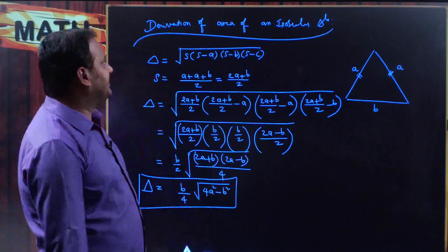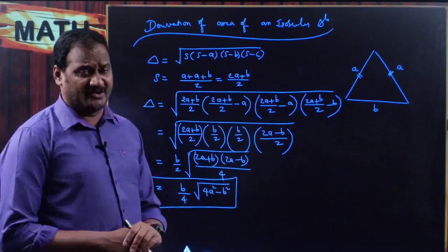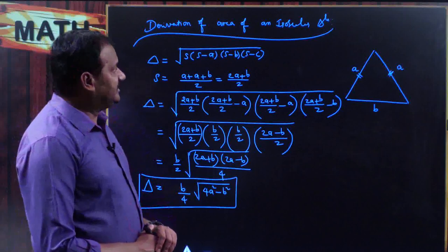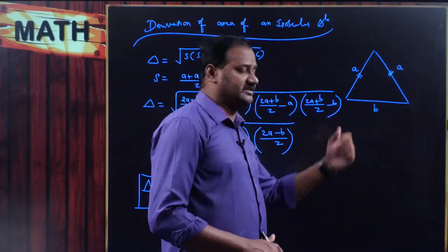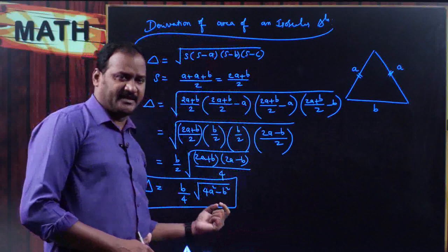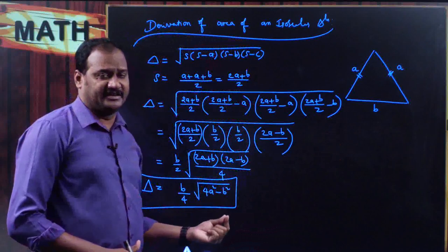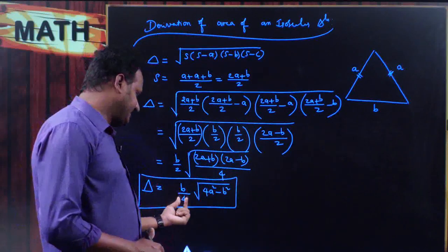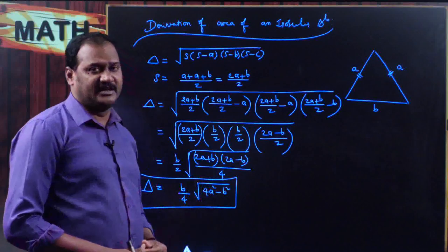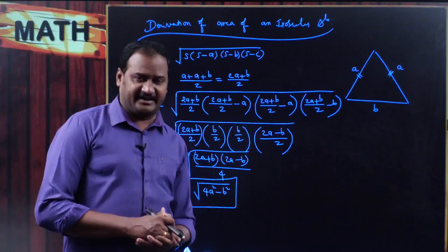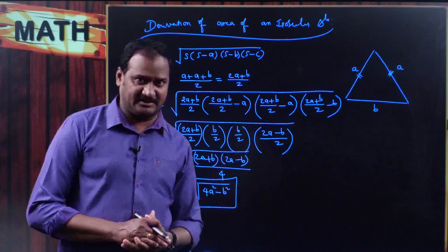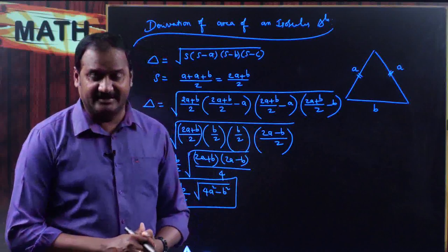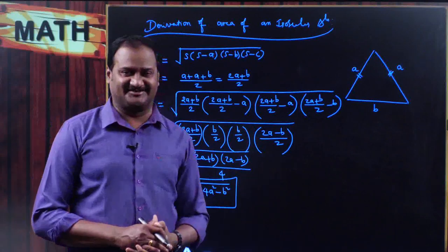Hope you understand. By using Heron's formula, we derived what is the formula for area of equilateral triangle when all three sides are given, and what is the formula for area of an isosceles triangle when two equal sides and one unequal side is given. Please remember, the formula is b divided by 4 into square root of 4a squared minus b squared. Hope you understand and enjoy the class. Thank you.